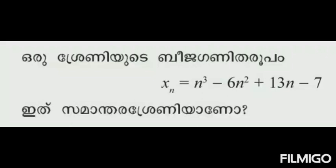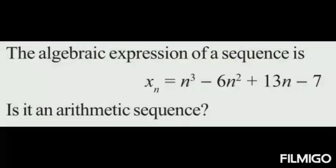The algebraic expression of a sequence is xn = n³ - 6n² + 13n - 7. Is it an arithmetic sequence?